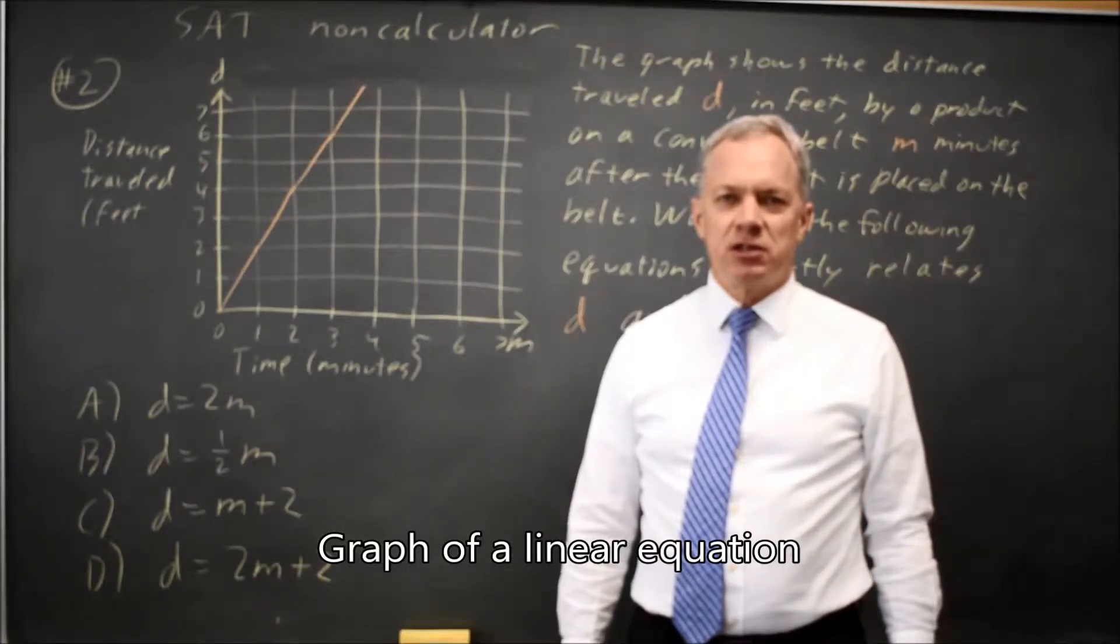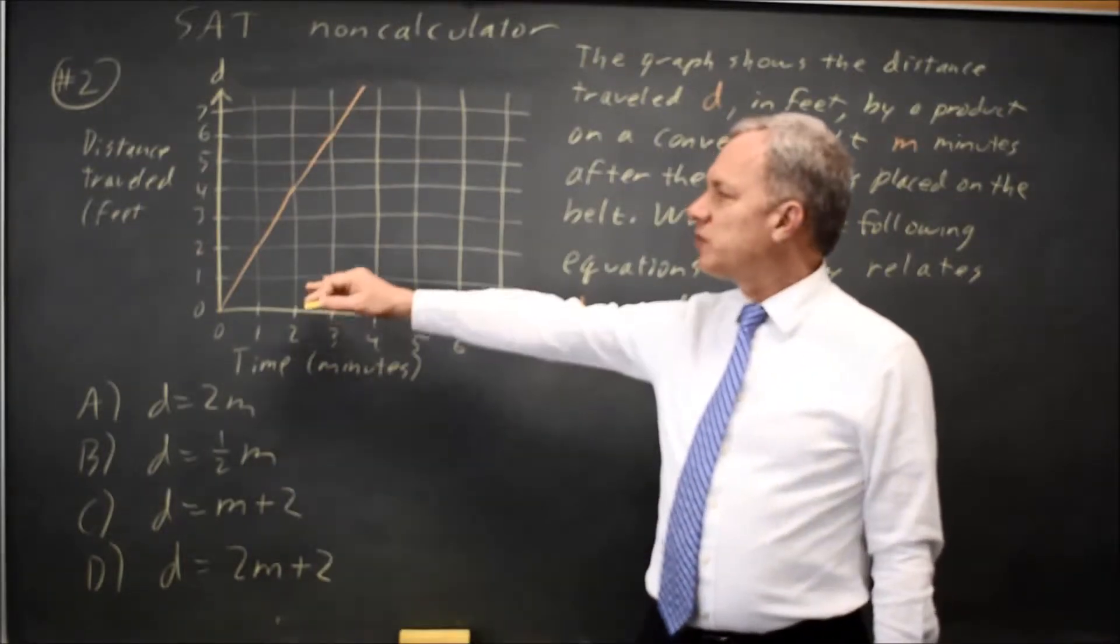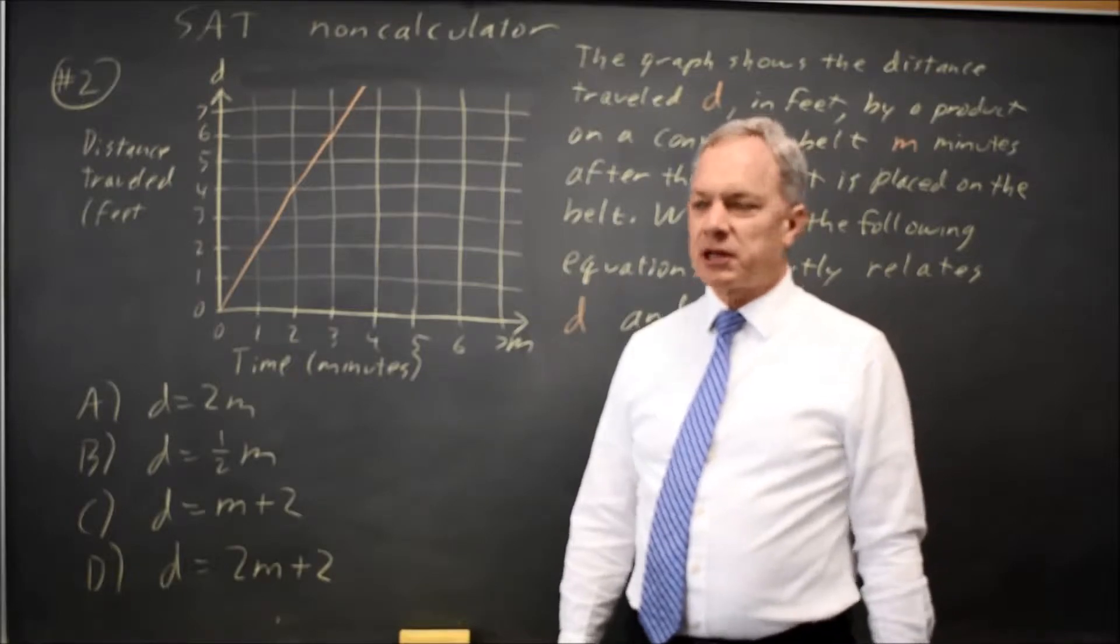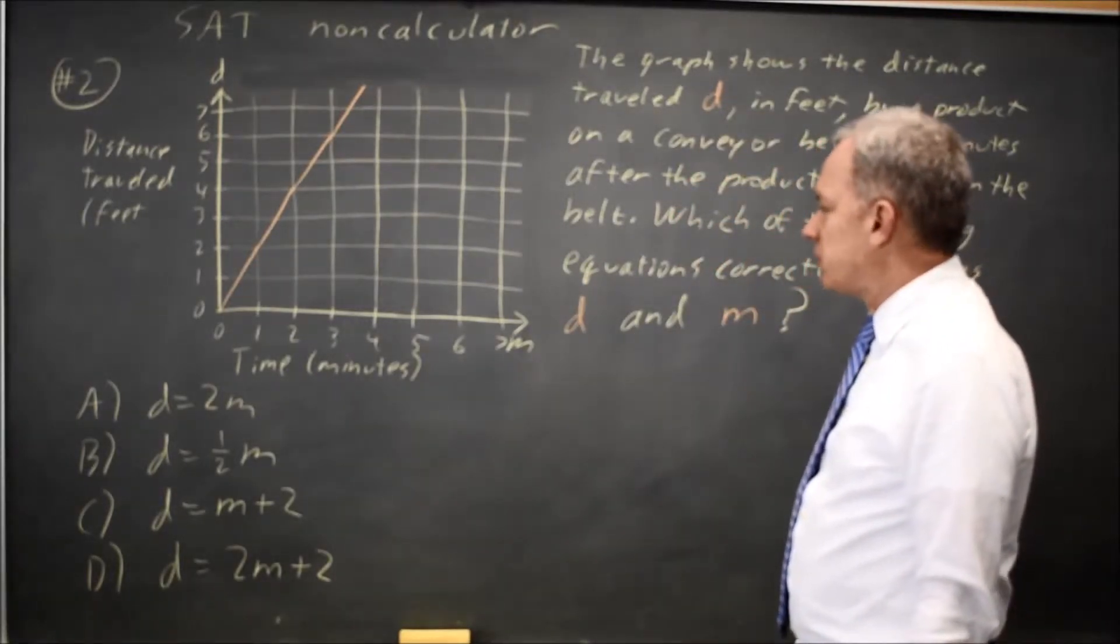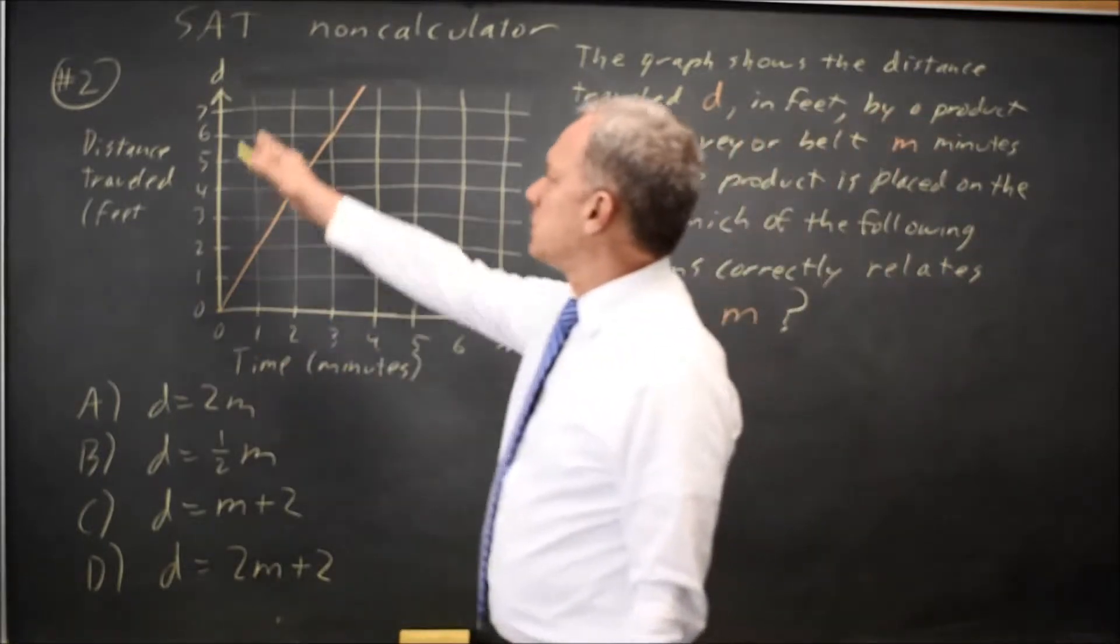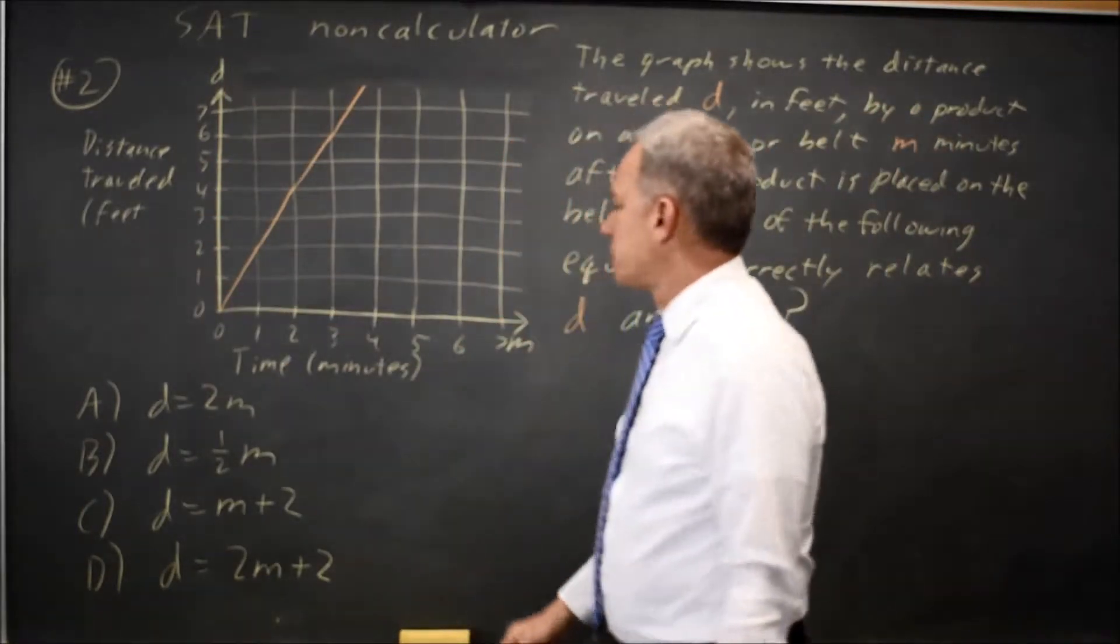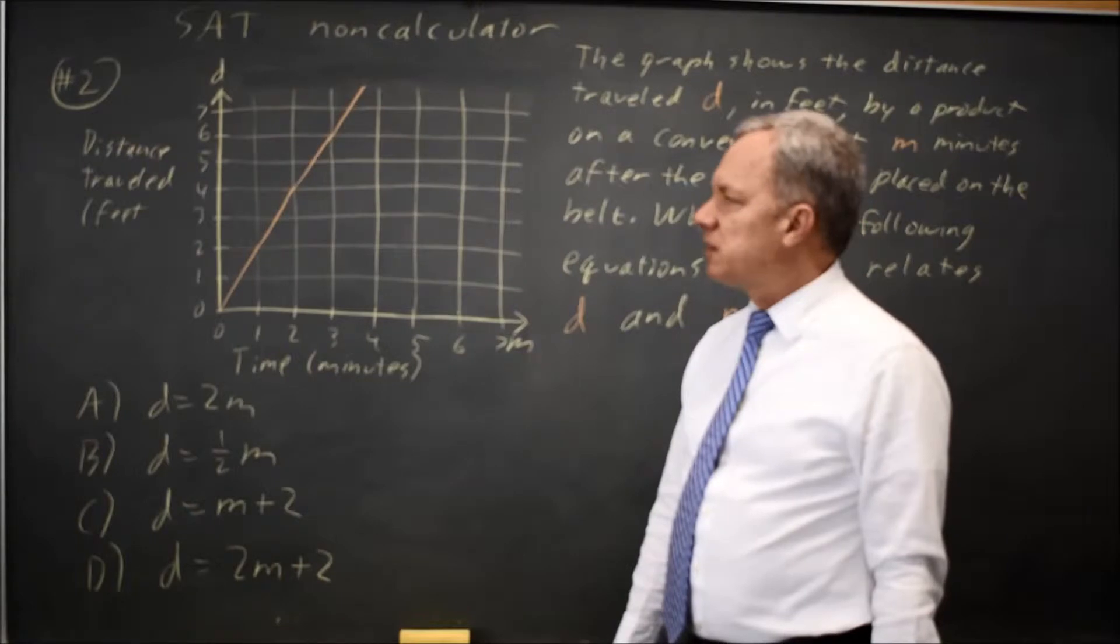This is non-calculator question number two. College Board gives us a graph of a linear relationship and asks which of these choices for equation correctly relates D and M, where D is our vertical axis, M is our horizontal axis, with these scales as marked.